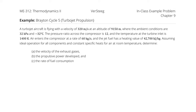A turbojet aircraft is flying with a velocity of 320 meters per second at an altitude of 9,150 meters, where the ambient conditions are 32 kilopascals and negative 32 degrees Celsius. The pressure ratio across the compressor is 12, and the temperature at the turbine inlet is 1,400 Kelvin. Air enters the compressor at a rate of 60 kilograms per second, and the jet fuel has a heating value of 42,700 kilojoules per kilogram.